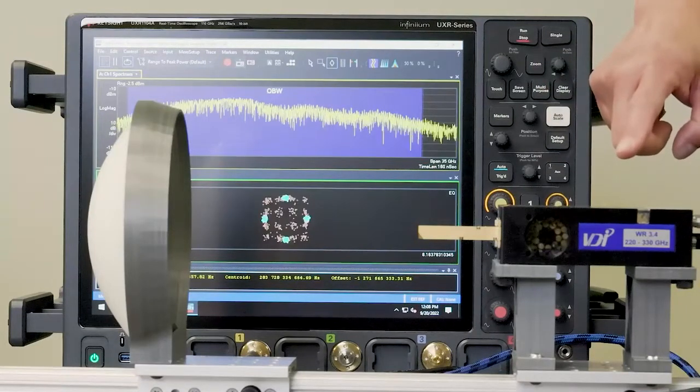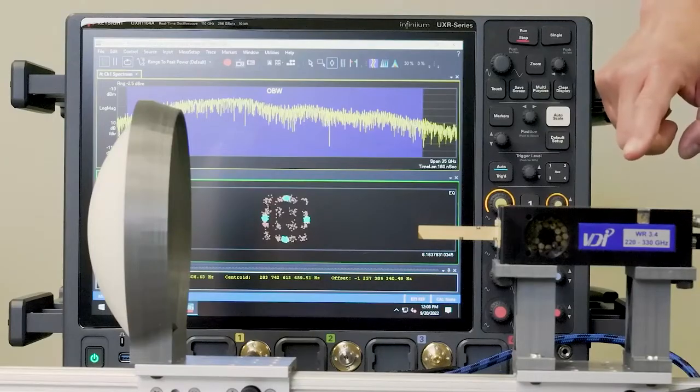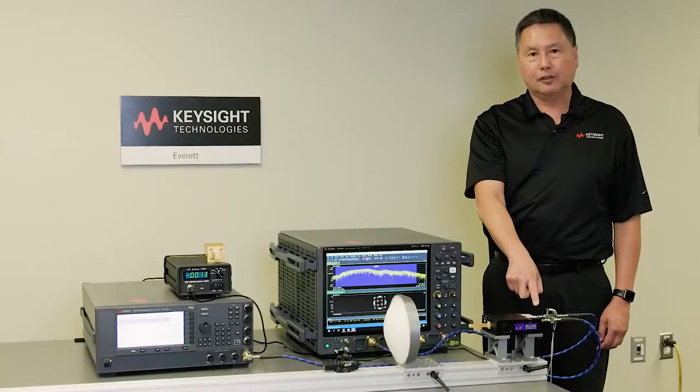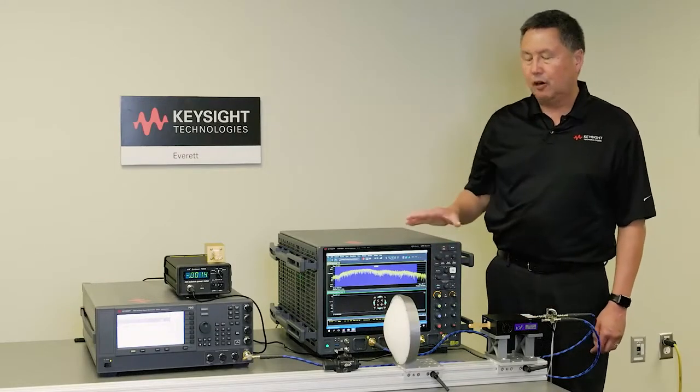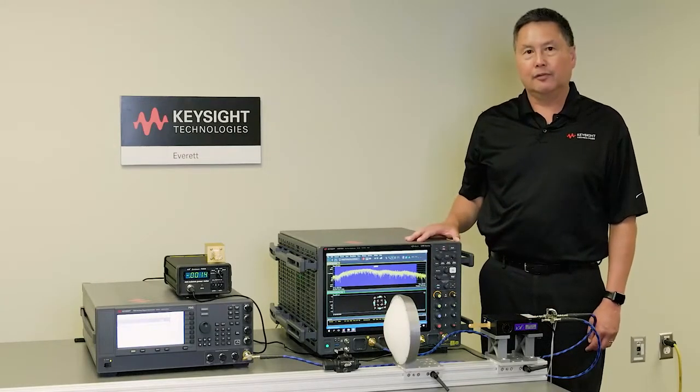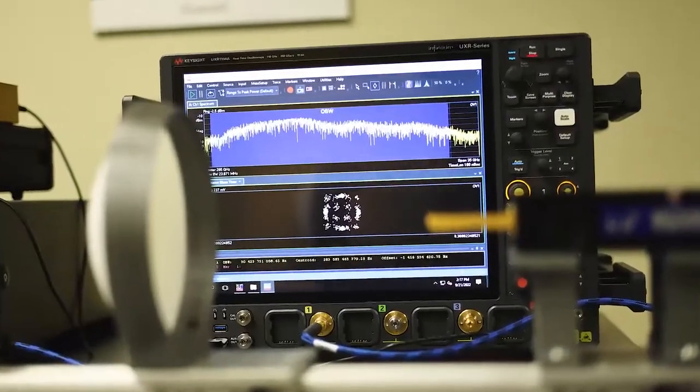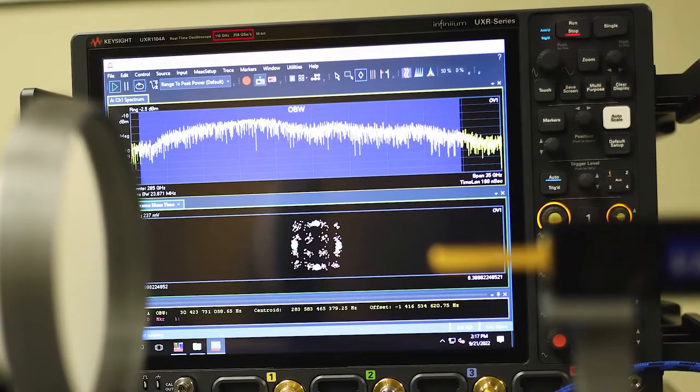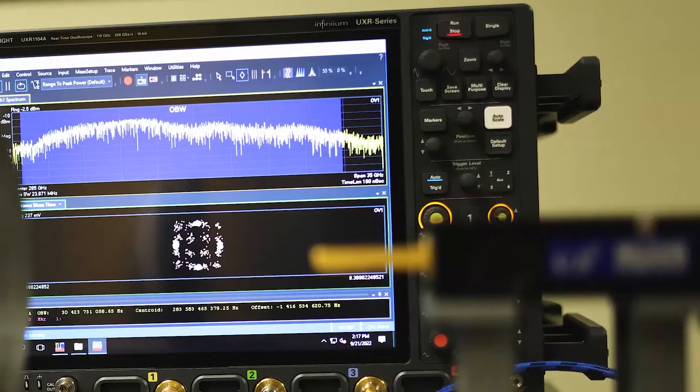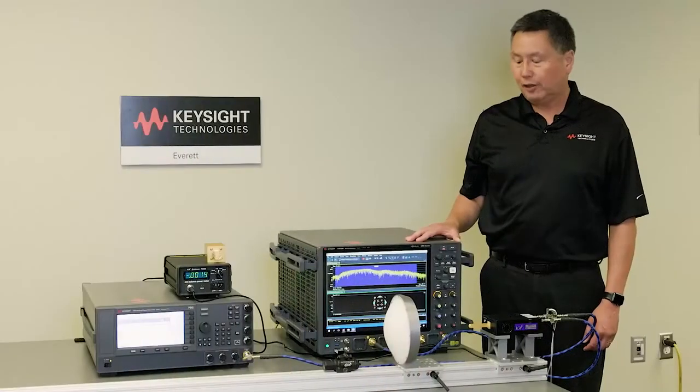The VDI downconverter is being used to downconvert the signal to an IF of 25 gigahertz, where it's amplified by an external IF amplifier and then fed into our flagship UXR. This UXR is a four-channel UXR sampling at 256 gigasample per second with a bandwidth of 110 gigahertz. So we're using it to digitize the 25 gigahertz IF.